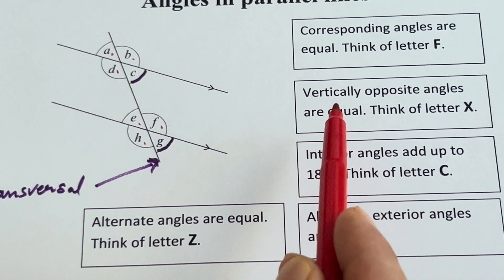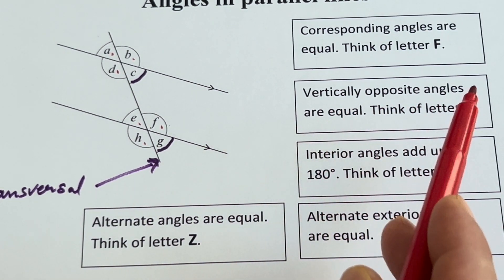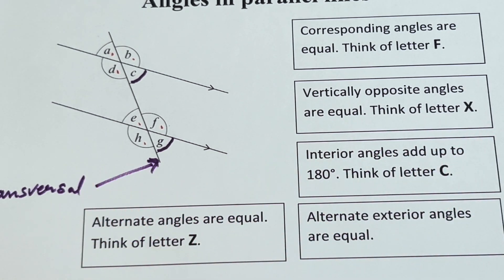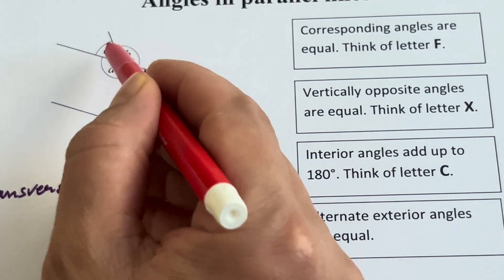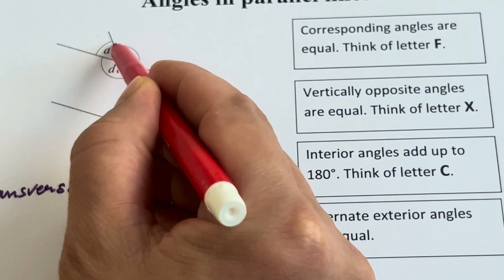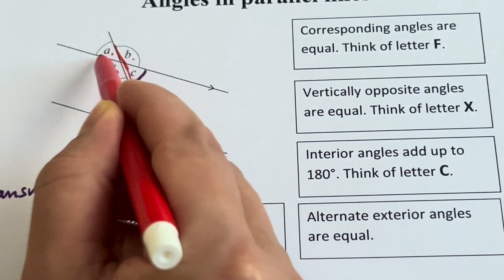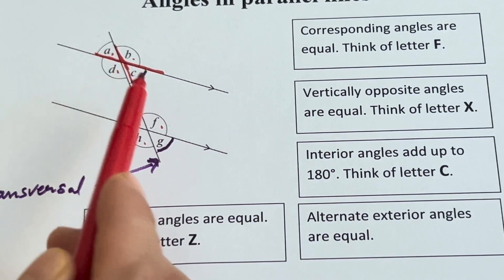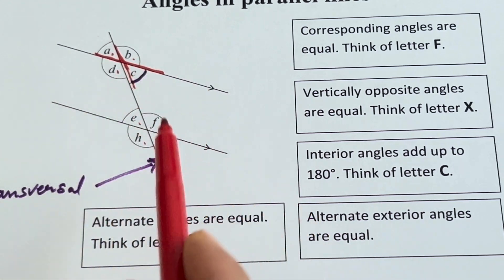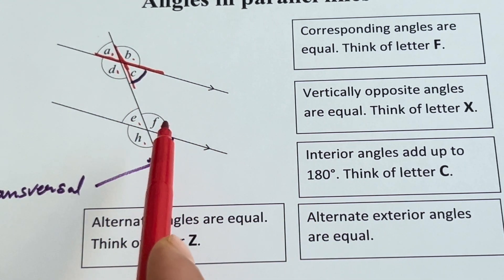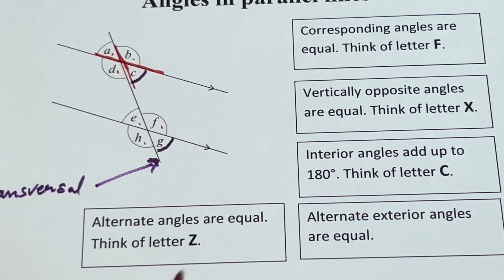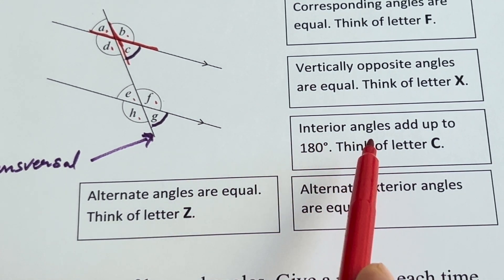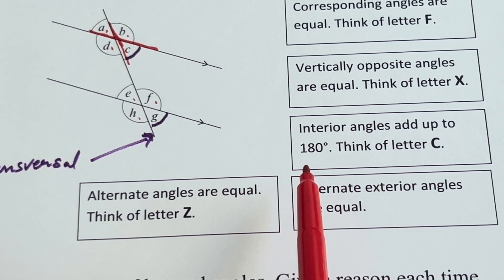The second point says vertically opposite angles are equal — think of the letter X. If you draw a line like this, angle A and angle C are vertically opposite, B and D similarly, and E and G, F and H. They are all equal.